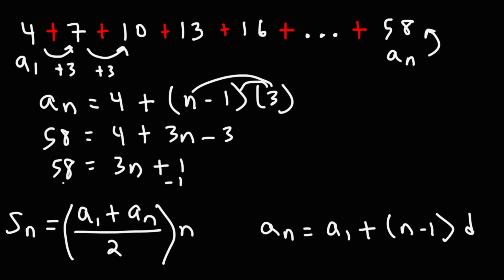So 58 is equal to 3n plus 1. Subtracting both sides by 1, we get 57 is equal to 3n. Dividing both sides by 3, we get n is equal to 19.